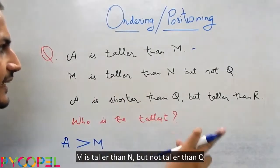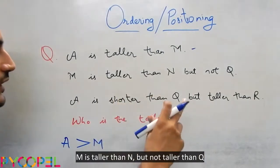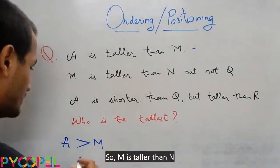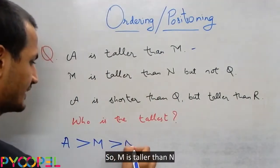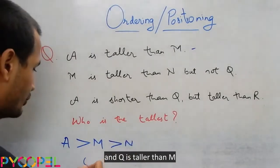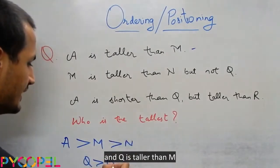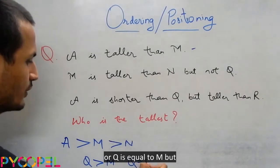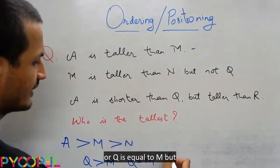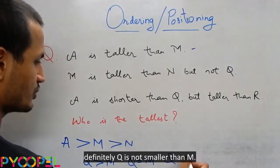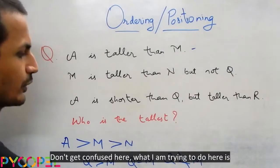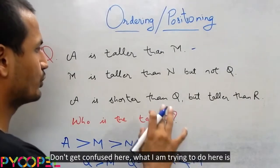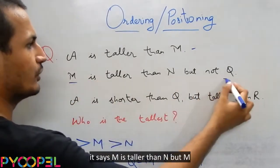M is taller than N but not taller than Q. So M is taller than N and Q is taller than M or Q is equal to M. But definitely Q is not smaller than M. Don't get confused here. What I am trying to do here is M and Q.